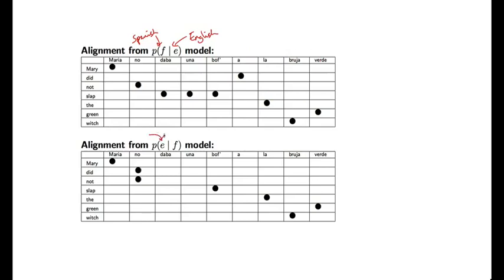Here's the alignment from the reverse model. So I can train an IBM model 2 for this language pair, but going in the opposite direction where I model the conditional probability of the English given the Spanish. And from that I can again derive the most likely alignment. Now notice that this alignment has the constraint that each English word is aligned to a single Spanish word. So if I look at any row of this matrix, there's a single dot in each row specifying the Spanish word that this English word was aligned to.